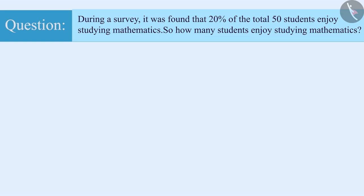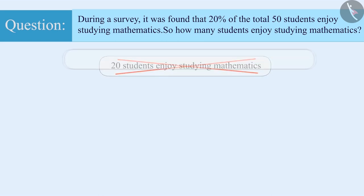Many times, students misunderstand percent to be real numbers. Like in this example, they misread '20% of 50 students enjoy studying mathematics' that 20 children enjoy studying mathematics. But this is a misunderstanding.